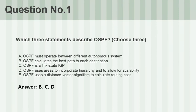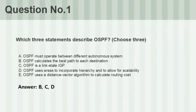Question number one: Which three statements describe OSPF? Choose three. A. OSPF must operate between different autonomous systems. B. OSPF calculates the best path to each destination. C. OSPF is a link-state IGP. D. OSPF uses areas to incorporate hierarchy and to allow for scalability. E. OSPF uses a distance vector algorithm to calculate routing cost. Answer: B, C, D.